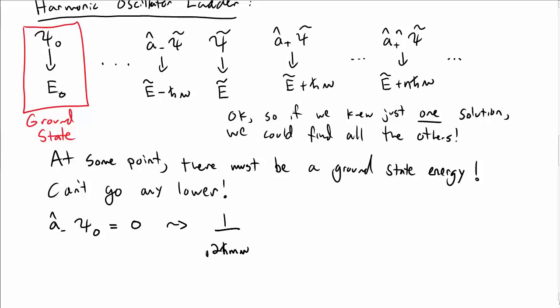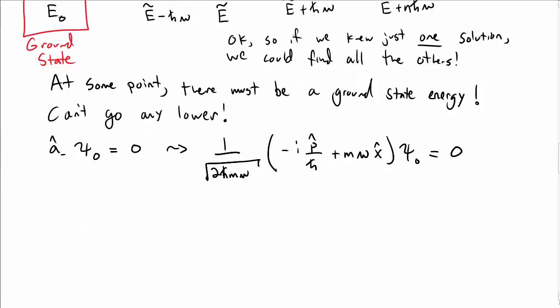Well I could write that out because I know what A- is. So A- is this square root times (-ip̂/ℏ + mωx̂) times ψ₀, and we're saying that must be equal to zero.